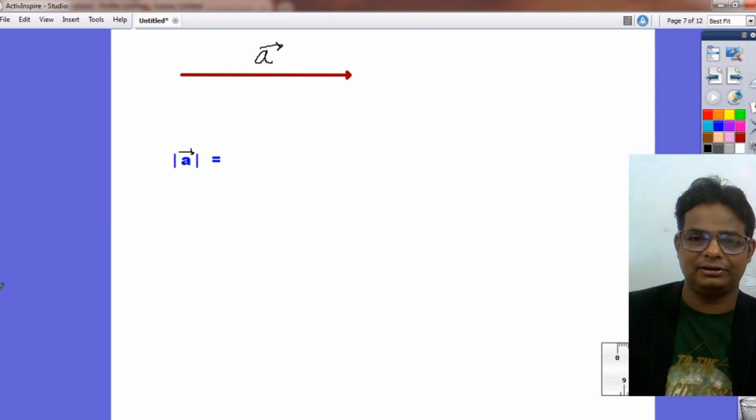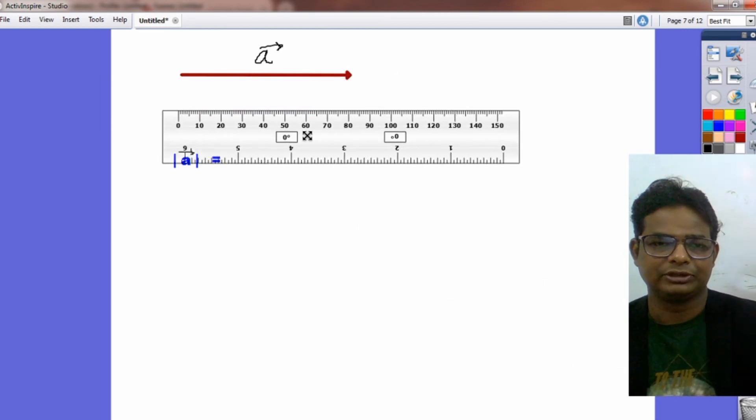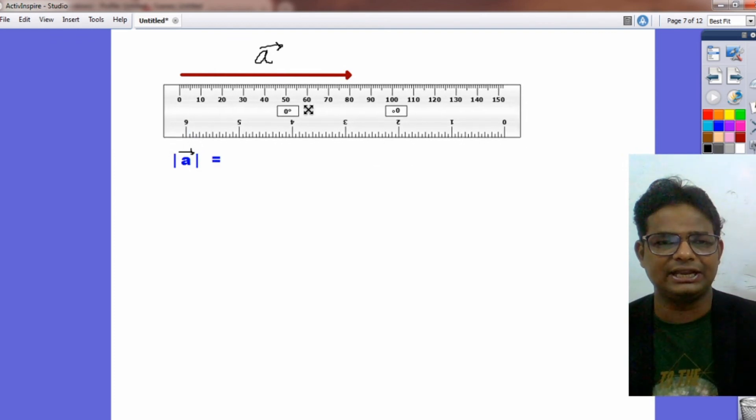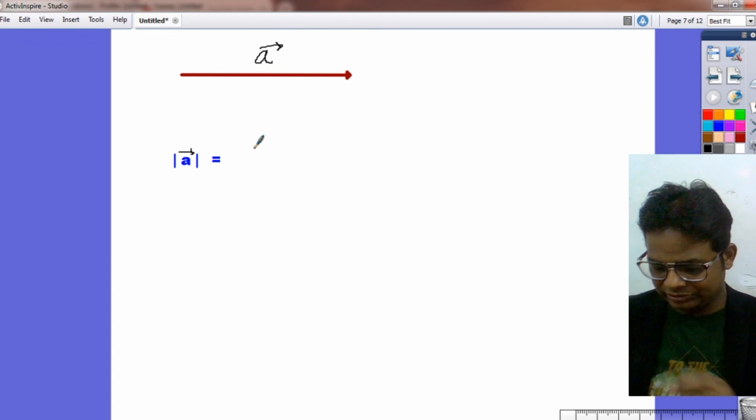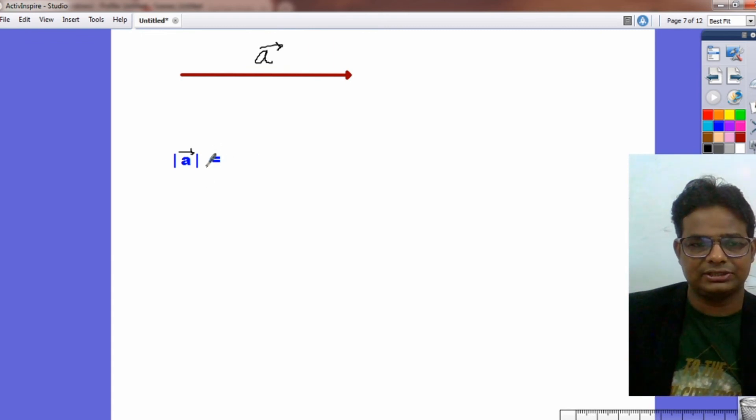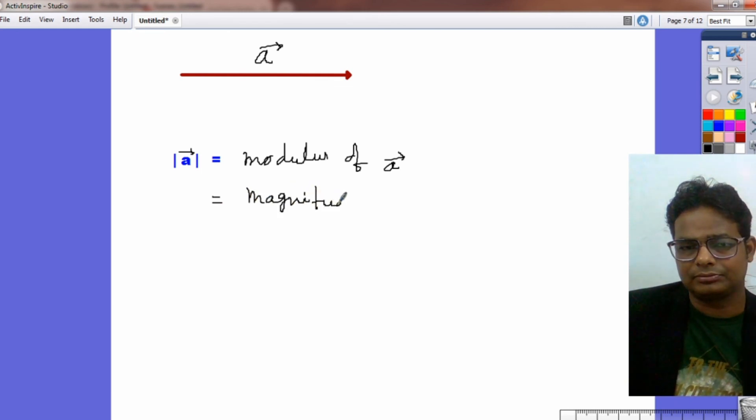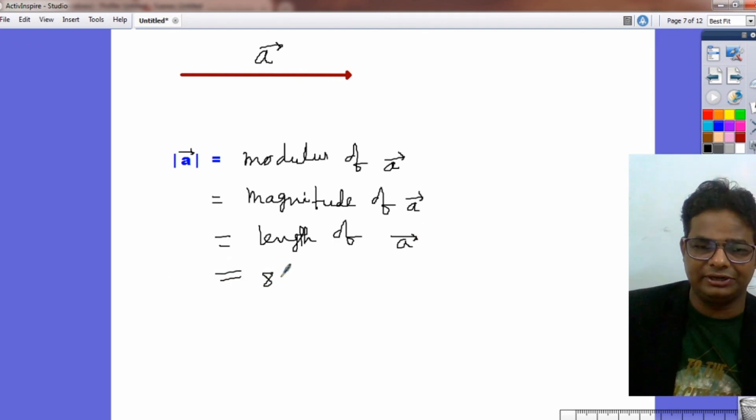Now, take an example of a vector. Suppose we have to measure its magnitude. So, magnitude means length and length can be measured using a scale. So, in this scale, we can see the length is approximately 80 cm. So, then here we can write this. This is read as modulus of vector A. Or we can say magnitude of vector A. Or we can say length of vector A. And in this scale, we have seen how much it is. 80 cm.